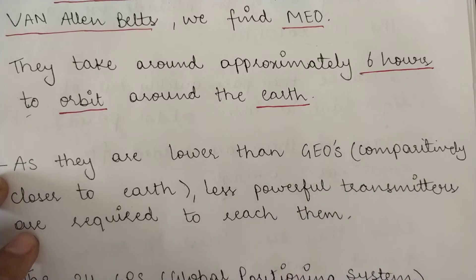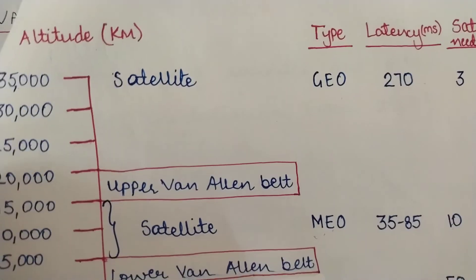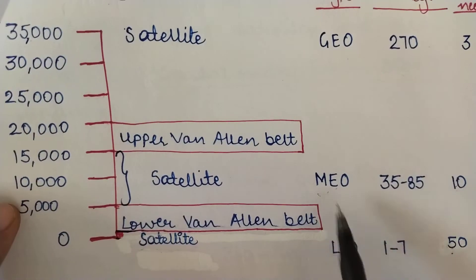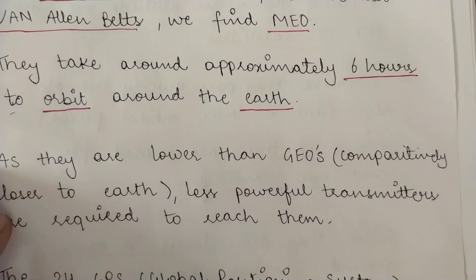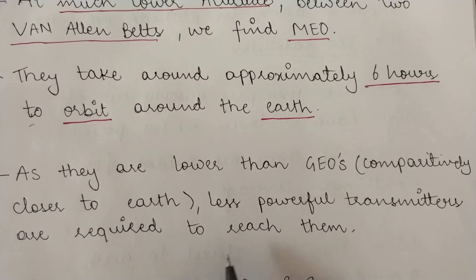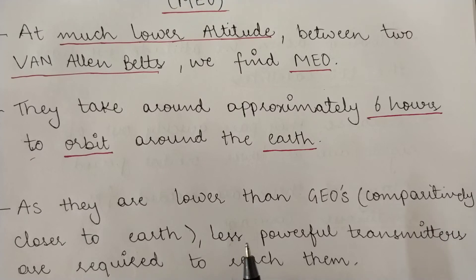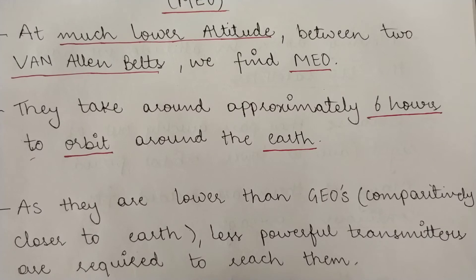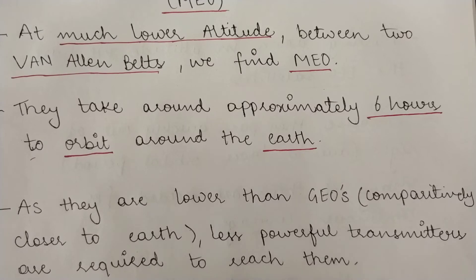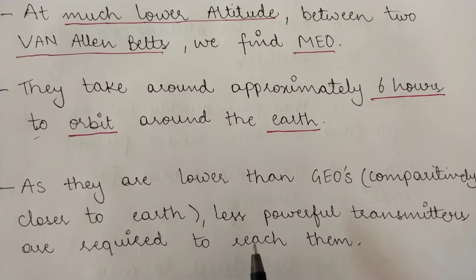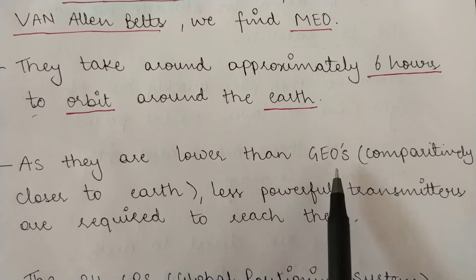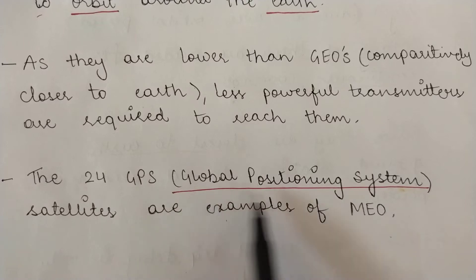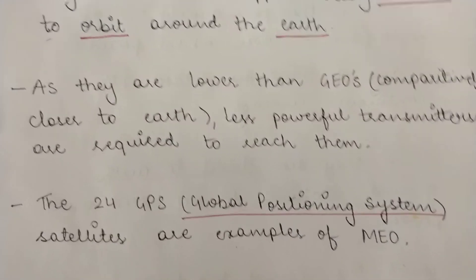Since the medium earth orbit satellites are lower than the geostationary earth satellites, they are comparatively closer to earth. As seen in the diagram, MEO satellites are much closer to earth compared to GEO satellites. For this reason, less powerful transmitters are required at the ground stations to reach them. The examples of medium earth orbit satellites are your global positioning satellites — GPS.